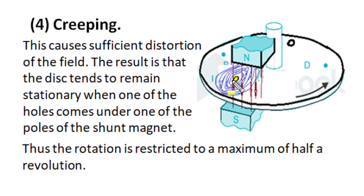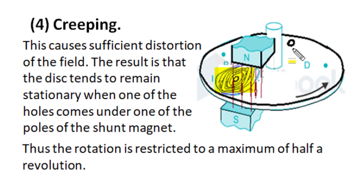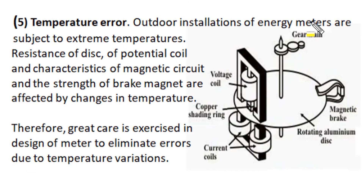When a drilled hole comes under the brake magnet position, there is no material for eddy currents to flow. Due to variation in brake magnet flux during rotation, induced eddy currents circulate in a closed loop around the drilled hole, producing a sufficient distortion of the magnetic field distribution. This generates a magnetic polarity opposite to the brake magnet polarity. This braking and locking condition holds the rotation of the disk, tending to remain stationary when any one hole comes under the brake magnet's field. Rotation is thus restricted to a maximum of half a rotation — this is called creeping adjustment.